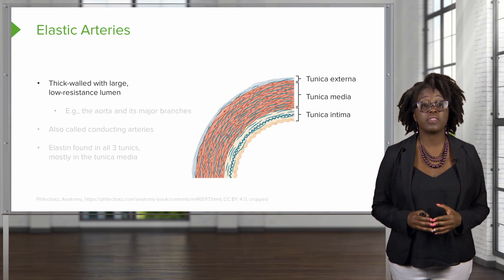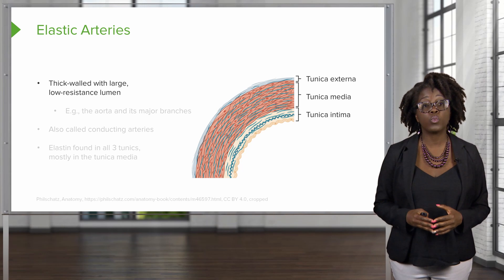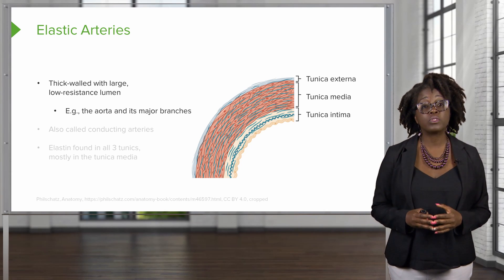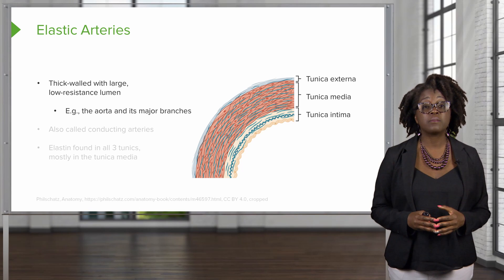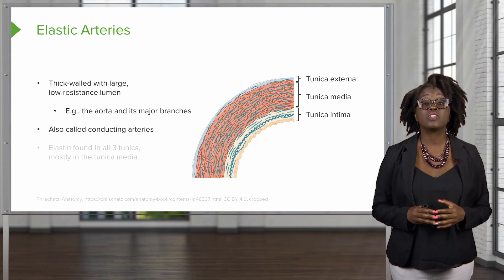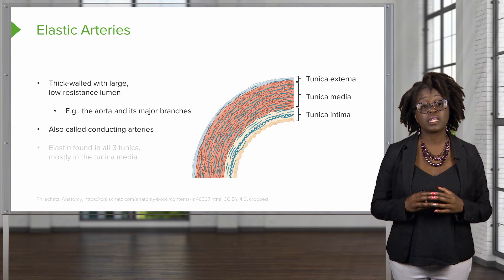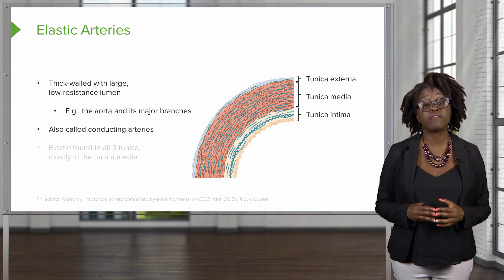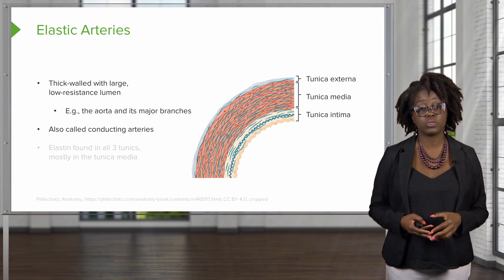Starting with the elastic arteries, these are going to be thick-walled with large, low-resistance lumens. Examples include the aorta and its major branches. They are also called conducting arteries because elastic arteries are going to conduct blood from the heart to the medium-sized vessels.